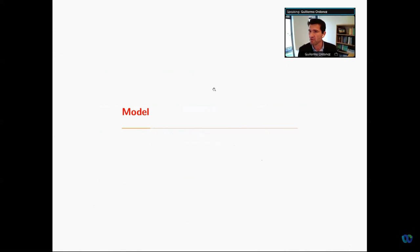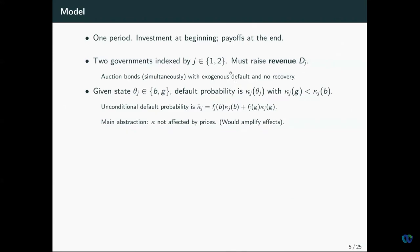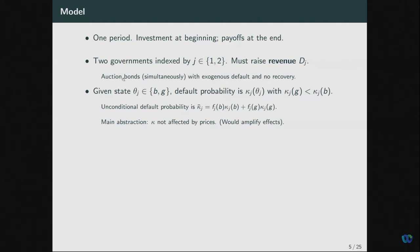Let me go straight to the model. There is just one period: investment in bonds at the beginning and payoffs at the end. There are two governments indexed by J, one and two, and they need to raise some amount of money D_J. They're going to sell bonds simultaneously through auction. These bonds default exogenously — you can imagine some fiscal process behind this. In case of default, investors recover nothing. Each country may be in one of two states, bad or good, which determine the default probability. The default probability in the bad state is higher than in the good state. We call the unconditional default probability K-bar, and we abstract from prices affecting default probability.